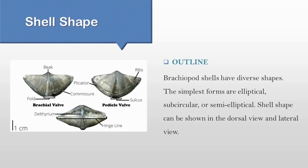Shell shape. The shell shape of brachiopods can be described by two topics: these are outline and convexity. Brachiopod outline is a feature used to describe the shape of a brachiopod. Depending on the changing shape of the commissure, the outline can vary in different classifications. A wide variety of geometric terms like circular, elliptical, pentagonal, and triangular are used to describe the outline of the valves of a brachiopod when viewed from the outside.